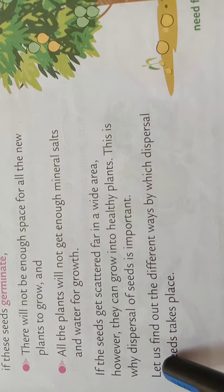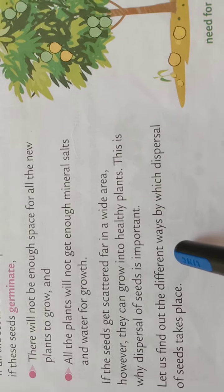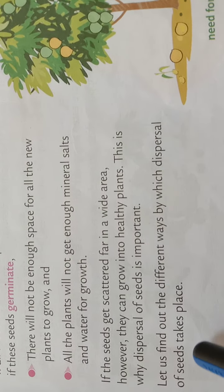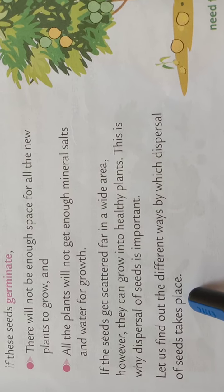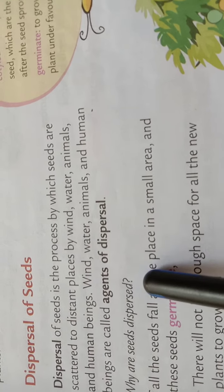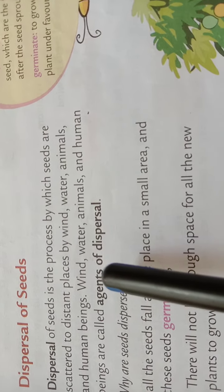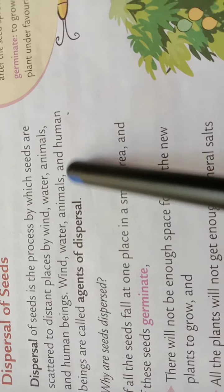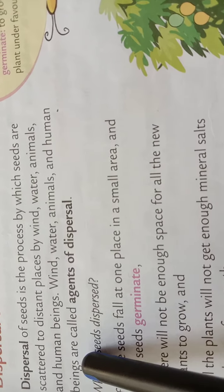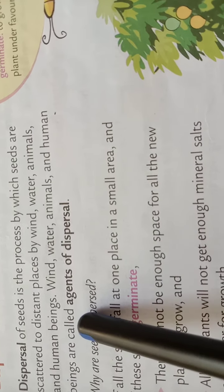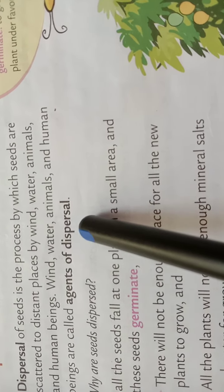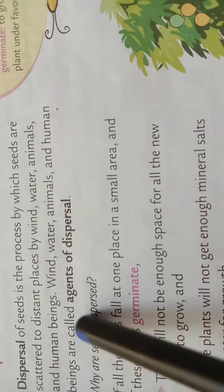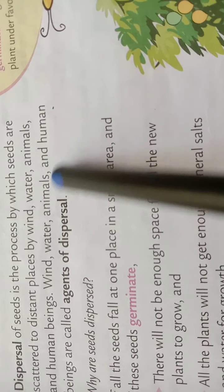Let us find out the different ways by which dispersal of seeds takes place. We have studied that wind, water, animals and human beings are called agents of dispersal. Now we'll learn these in detail.